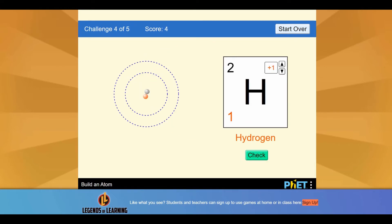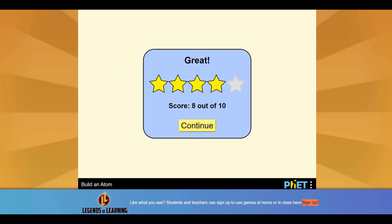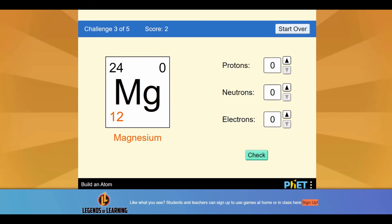In minigame 3, you will learn how to read a periodic table. In minigame 4, you will learn how to complete the properties of an element on a periodic table.